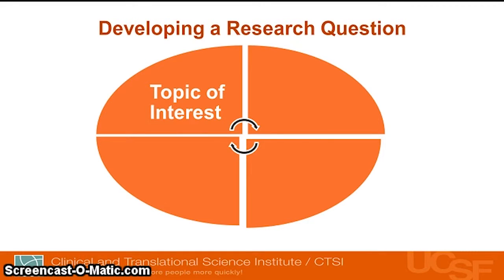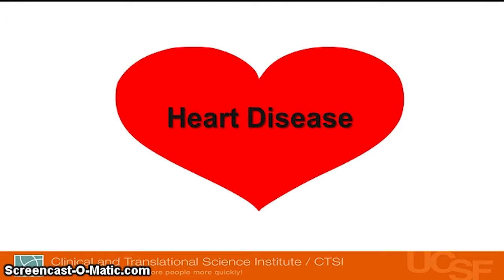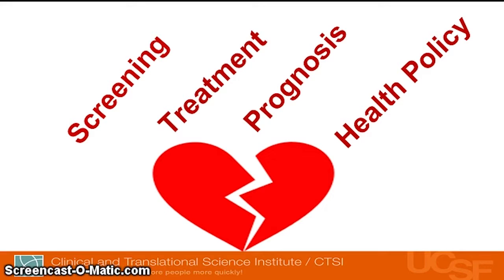So how do you derive a good research question? The first starting point is to pick a topic of interest to you — perhaps in your field of expertise or your mentor's field. Many people start with a very broad topic like heart disease, which is important but extremely broad. One of the first steps is to narrow down your topic area by focusing on a specific aspect, such as screening, treatment, prognosis, or health policy related to the condition.